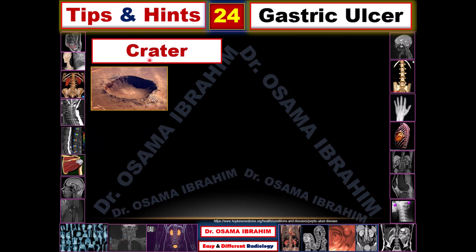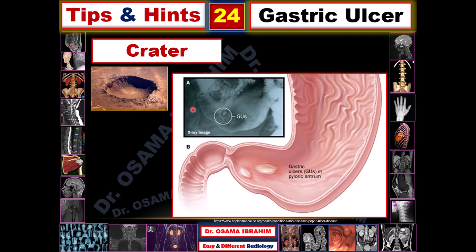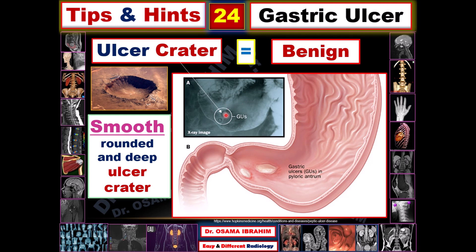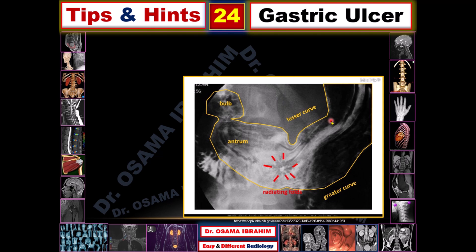The second feature of a benign ulcer is the crater. The crater appears as an opening or hole in the surface. Here we see two gastric ulcers in the antrum, forming craters — holes in the surface filled with contrast, with surrounding edema of the wall appearing lucent around the crater. A smooth, rounded and deep ulcer crater is a feature of benign gastric ulcer.